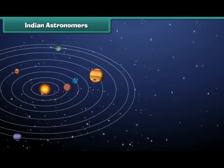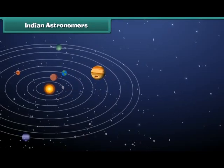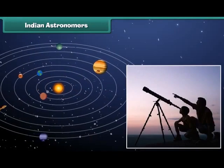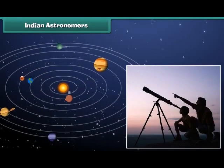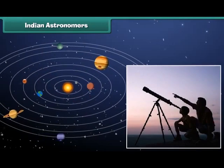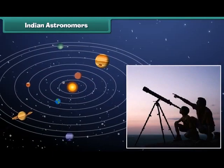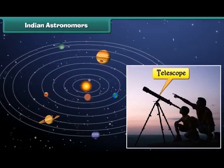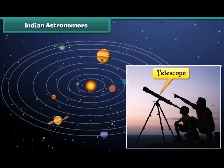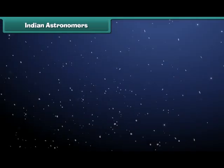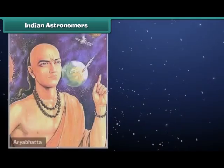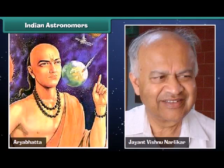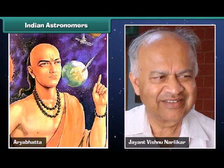Indian astronomers: An astronomer is a person who studies stars and planets. He uses a telescope for his study. Bhaskaracharya, Aryabhatta, and Jayant Vishnu Narlikar are some well-known Indian astronomers.